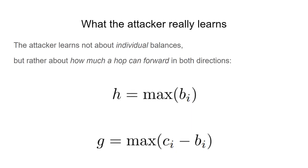So what the attacker really learns is not the information about individual balances, but, in the multi-channel hop case, how much a hop can forward in both directions. We refer to these two key parameters of a hop as H and G.